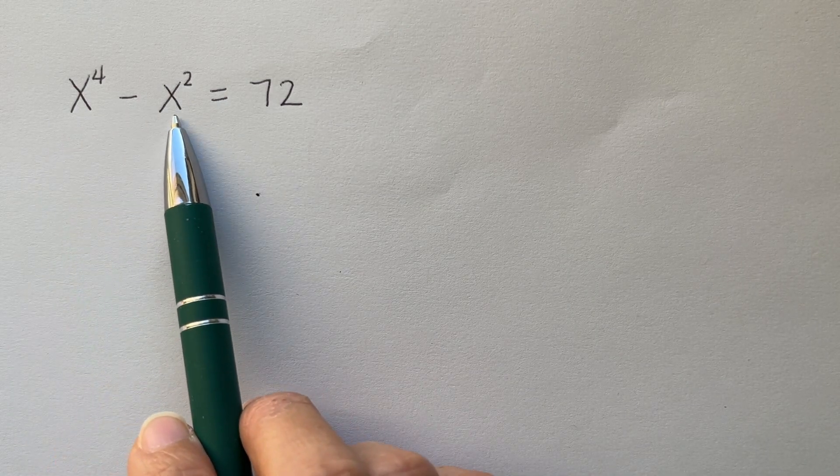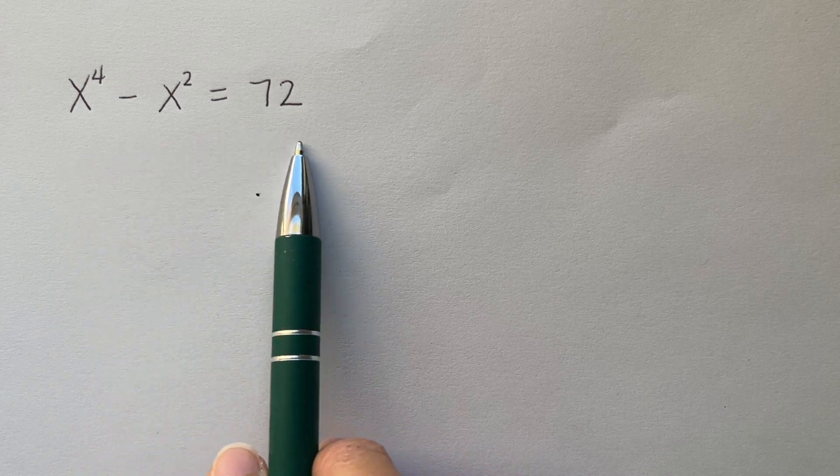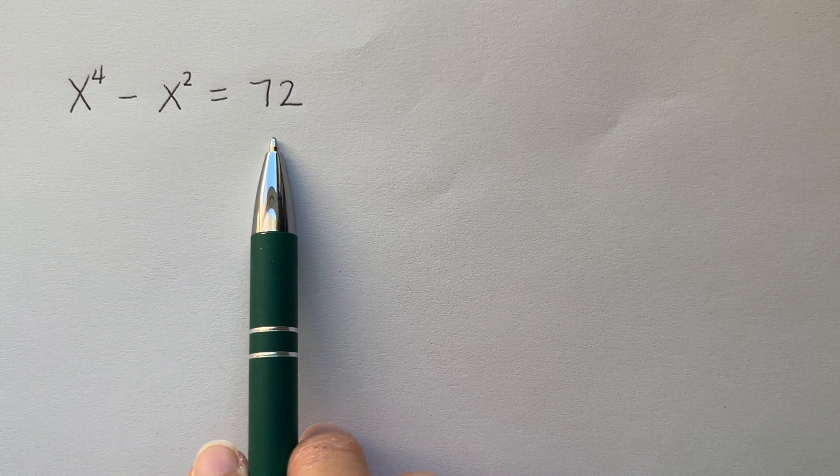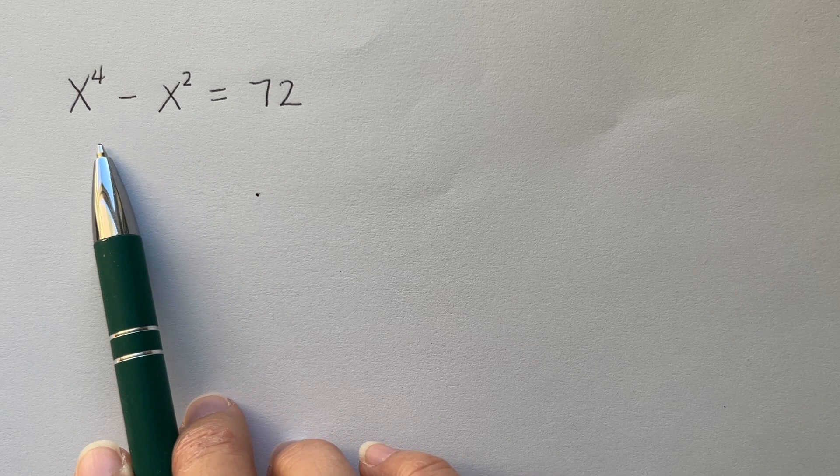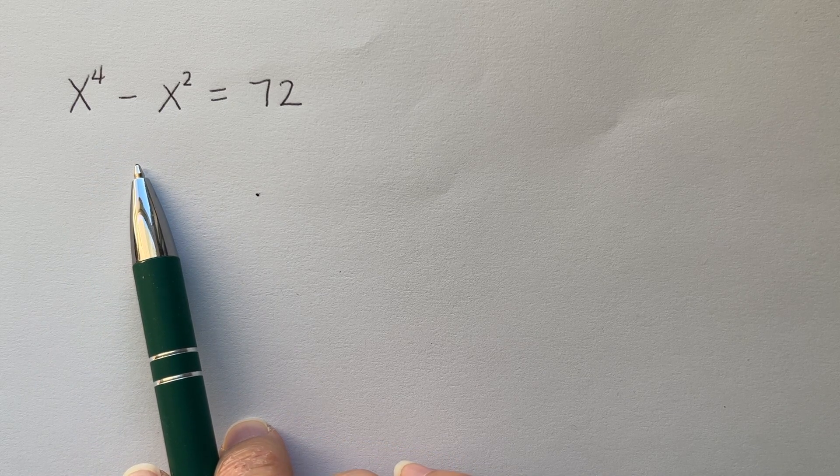x raised to the 4 minus x squared is equal to 72. This looks kind of like a quadratic formula, but not quite. Turn this into a quadratic formula that we can easily solve.